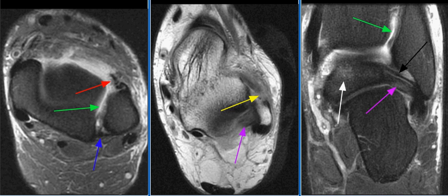The posterior inferior tibial fibular ligament includes the transverse tibial fibular ligament, its deep and inferior component, a true posterior labrum. The tibial slip extends from the posterior talofibular ligament to the posterior tibia and the transverse tibial fibular ligament.